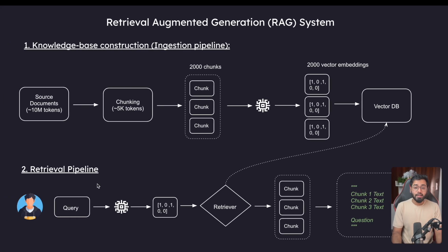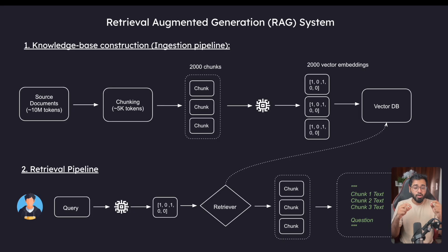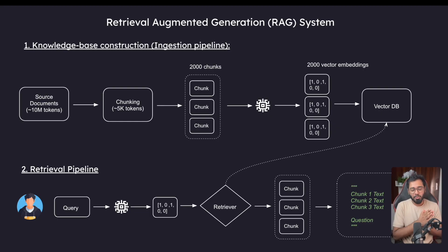That is it for the retrieval pipeline. In the next video, we are going to dive deep into how exactly this similarity matching happens — it's called the cosine similarity formula — and that is exactly what we are going to be covering. I'll see you there.